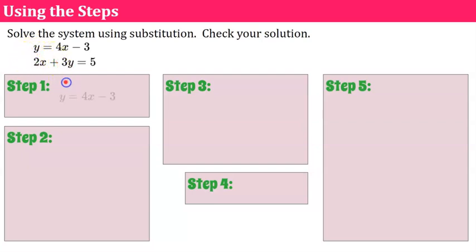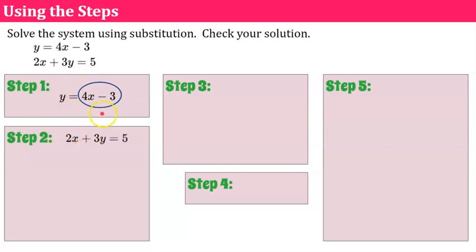Step one: I'm identifying the first equation because y is isolated — it's solved for y in slope-intercept form — and we know that y equals 4x minus 3. Step two: we start with our second equation, and we substitute 4x minus 3 in for y, using parentheses because it's 3 times y. So we now have 2x plus 3 times (4x minus 3) equals 5, and we'll solve this for x.